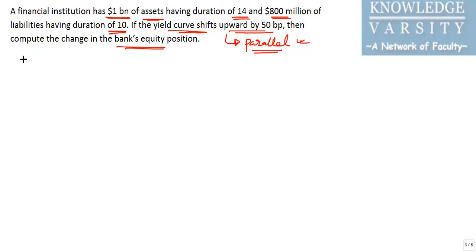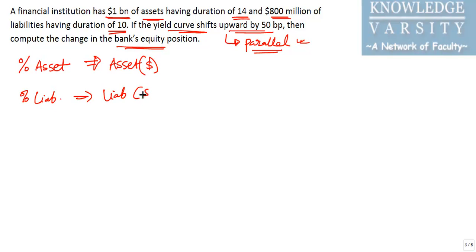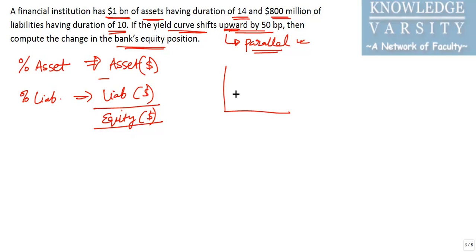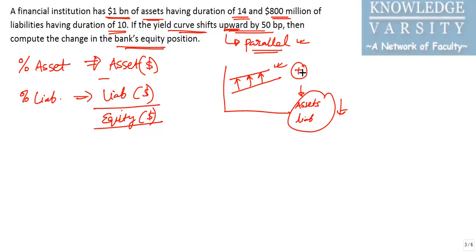Since duration is given, we can find the percentage change in asset value and the percentage change in liability value. From those, we can compute the dollar change in each. The difference — change in assets minus change in liabilities — gives us the change in equity in dollar terms. Note that the yield curve is shifting upward by 50 basis points in a parallel manner, so the value of both assets and liabilities will be decreasing due to the increase in yield.